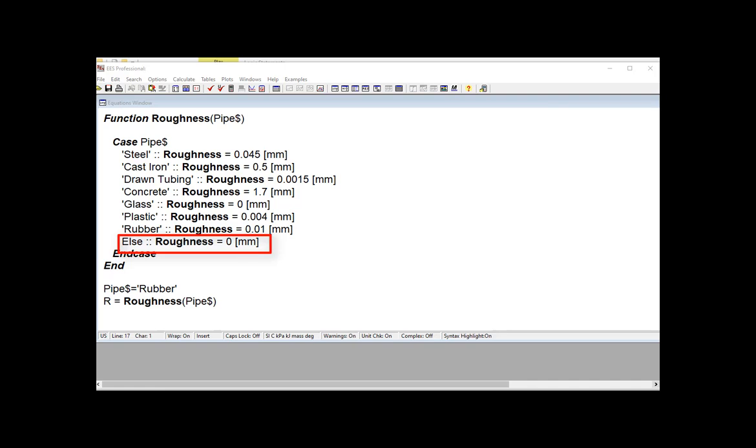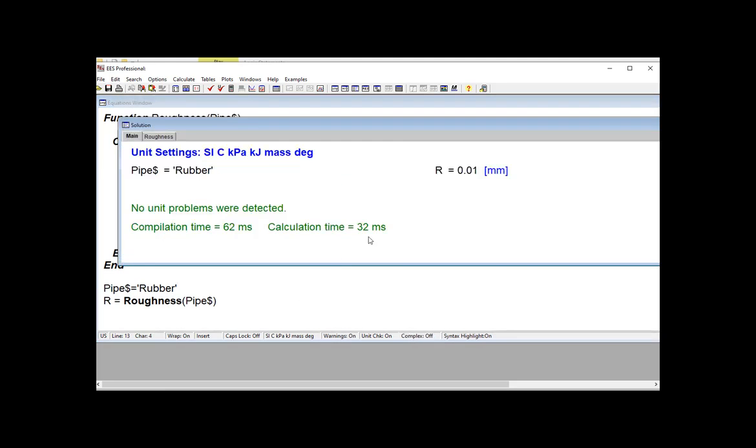And again, a better option in this instance might be to throw a warning that tells the user that you supplied a value of pipe dollar that doesn't match any of the acceptable values. So here we can test it. And if I set pipe dollar equal to rubber, I'll get back the roughness for rubber, which is 0.01 millimeters.